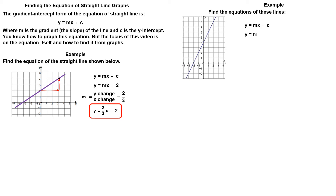Let's find the gradient. Choose two known points, starting at the y-intercept, from left to right. Go right 2 units and up 4 units. The gradient is 4 over 2, which equals 2. This is the equation of the line: y = 2x + 4.